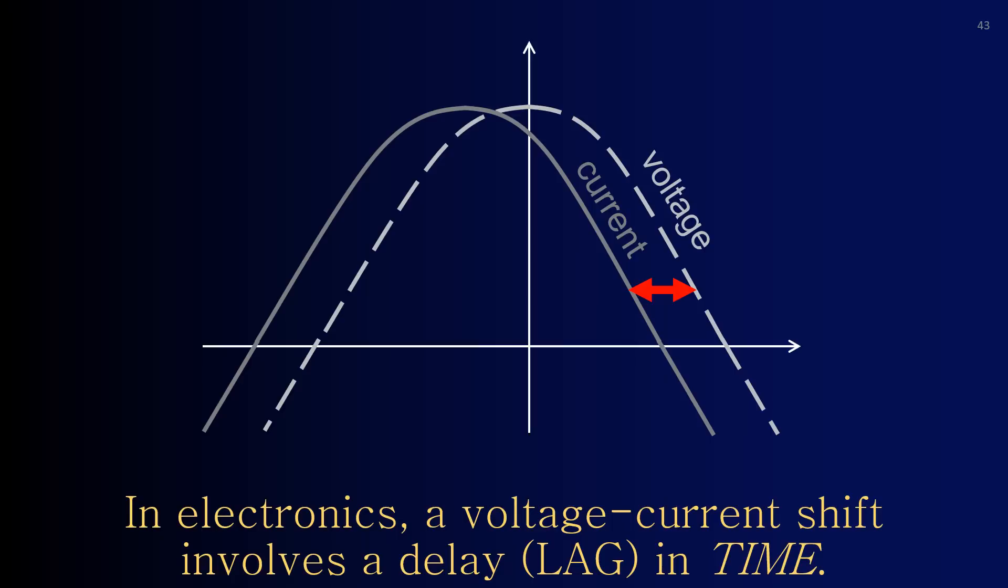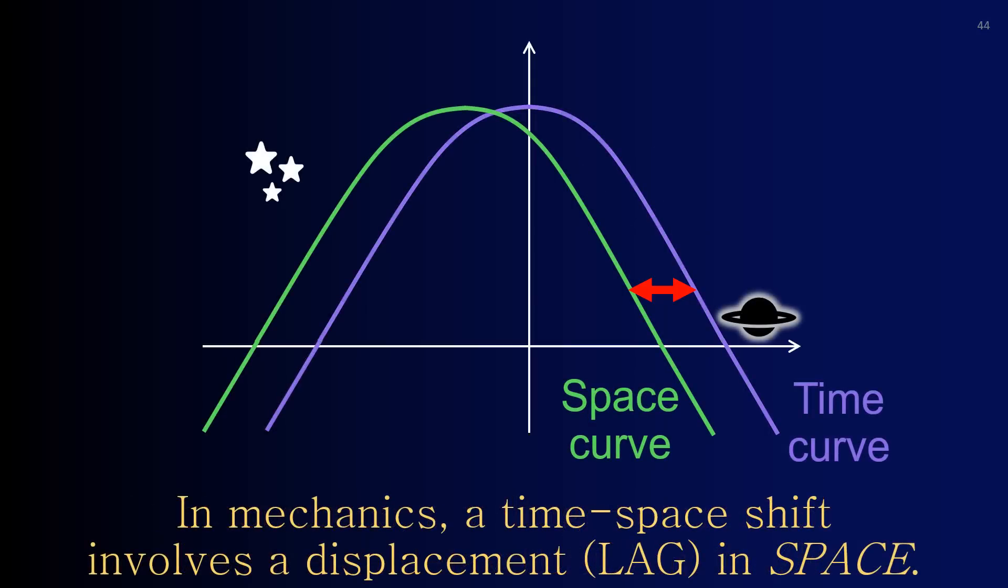In electronics, a voltage-current shift involves a delay in time. In mechanics, a time-space shift involves a displacement in space.